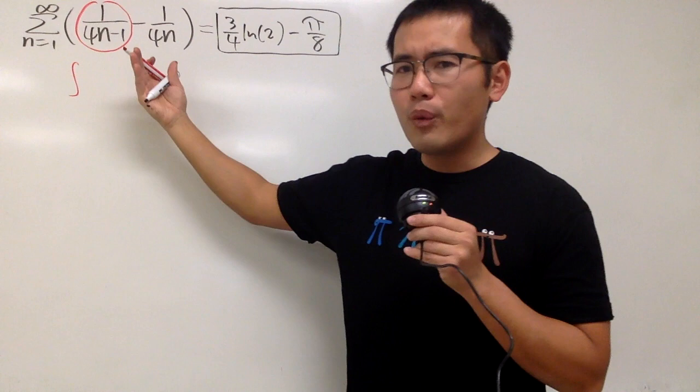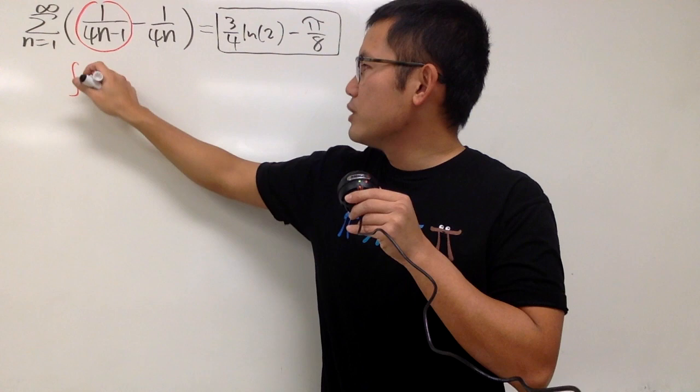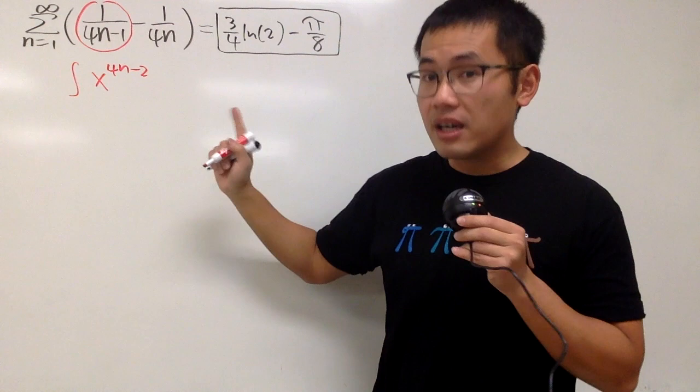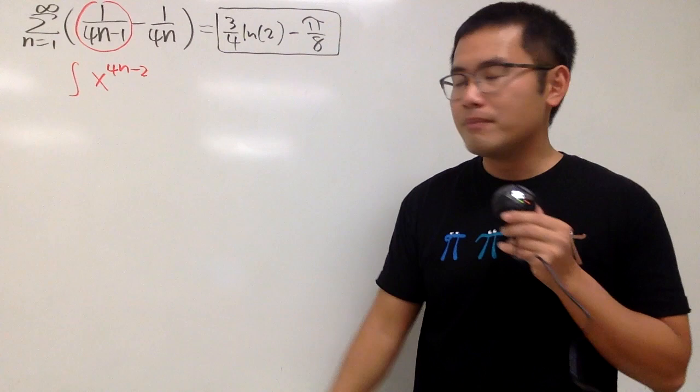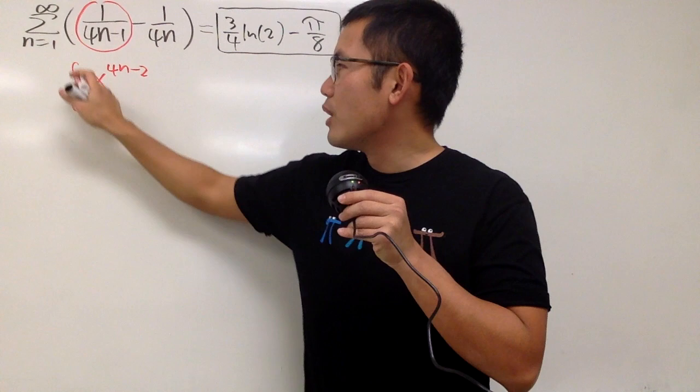Let me integrate x to the 4n minus 2. Because when we integrate this, I will have to add 1. So that will actually produce the 4n minus 1 for us, right? And then divided by the new power, we will end up with the 4n minus 1 on the bottom. I don't want to see any more x, so let's go ahead and integrate this from 0 to 1. And you will not see any more x. This will result in 1 over 4n minus 1, which is very nice.